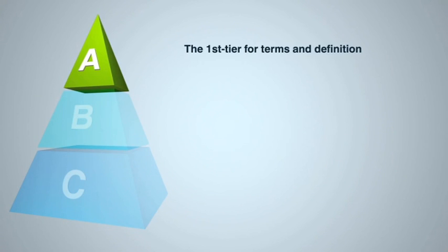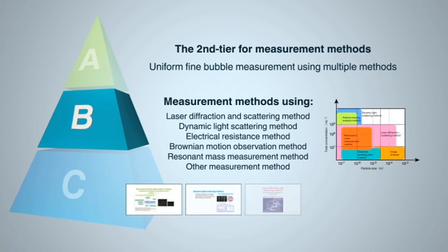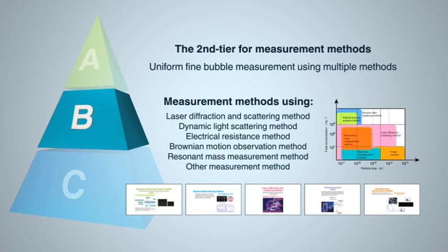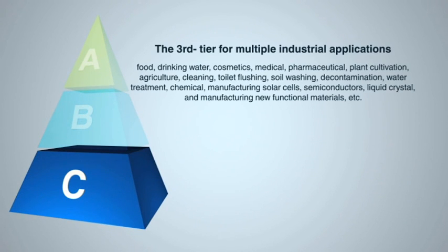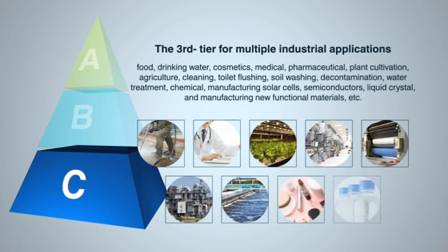Concerning measurement method standards for B, as regards the various measurement methods being developed, international standards for the conditions, preparations, and other factors for measuring fine bubbles are in the process of being clearly defined to avoid confusion in the market. Establishing standards will enable uniform fine bubble measurement to be performed using multiple methods for wider industrial application. The specific industrial application standard C will specify the fine bubble application technologies for the specific fields of industry in which they are likely to be used — thus it is necessary to clearly define the specific conditions and effects of each application in which fine bubble technology is used.